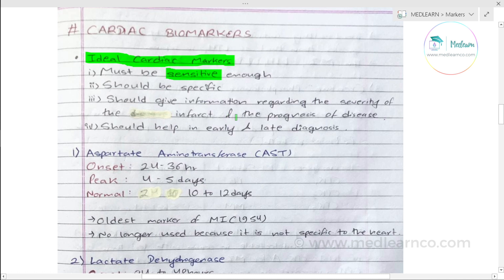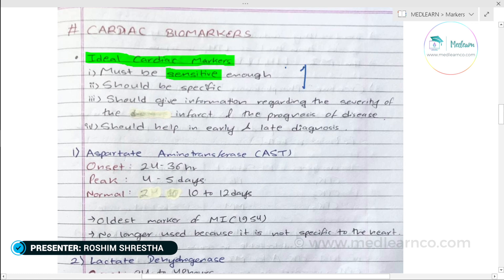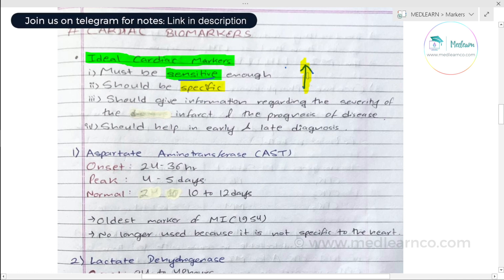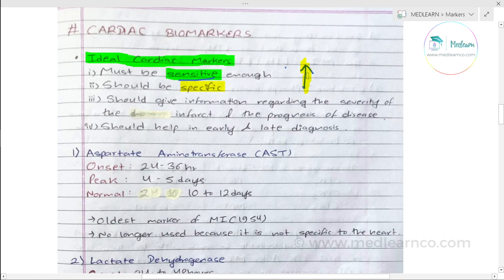If you look at a cardiac biomarker, you will see that the amount increases in response to cardiac injury. It should be sensitive and also specific for cardiac injury. It should give information regarding the severity of the infarct and about the myocardial infarct.